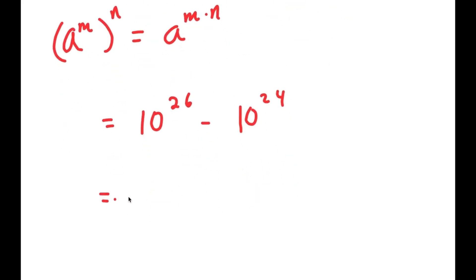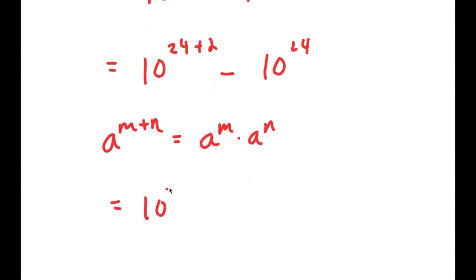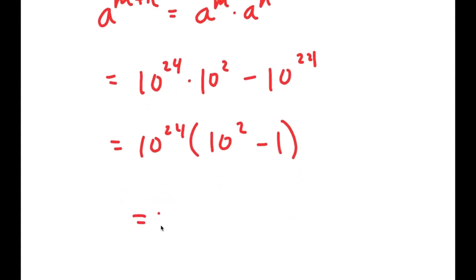Now, 26 is the same thing as 24 plus 2. And now I'm going to use the property a to the power of m plus n is equal to a to the power of m times a to the power of n. So this turns into 10 to the power of 24 times 10 to the power of 2, minus 10 to the power of 24. Now I can factor out 10 to the power of 24, so I get 10 to the power of 24 times 10 squared minus 1, which is equal to 10 to the power of 24 times 99.